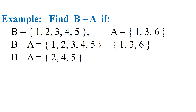Next example: find B minus A if set B = {1, 2, 3, 4, 5} and set A = {1, 3, 6}. B minus A contains all elements from set B that are not in set A. Now 1 is common to both sets so it is excluded. 3 is common to both sets so it is also excluded. 2, 4 and 5 are not present in set A, so our answer B minus A = {2, 4, 5} — only elements from set B.